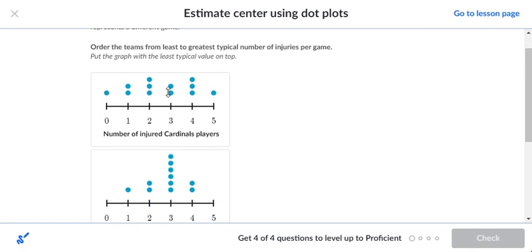Actually put the graph with the least typical value on top. So we want to go from smallest to largest. Right here we got one, two, three, four, five, six. So this would be our middle here. We're looking at three and then the two.